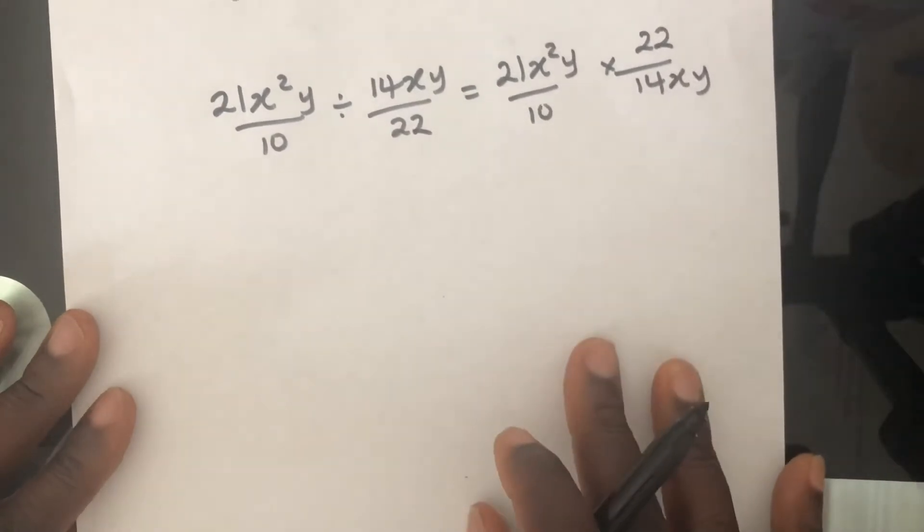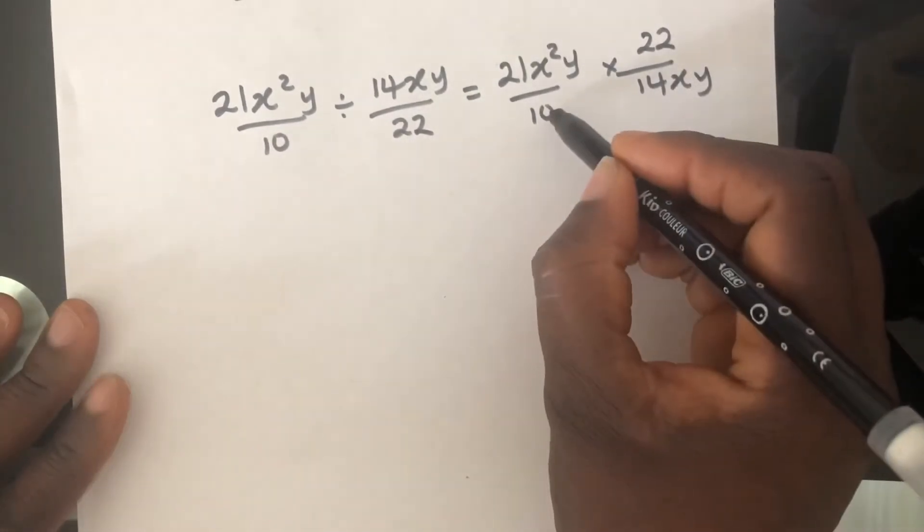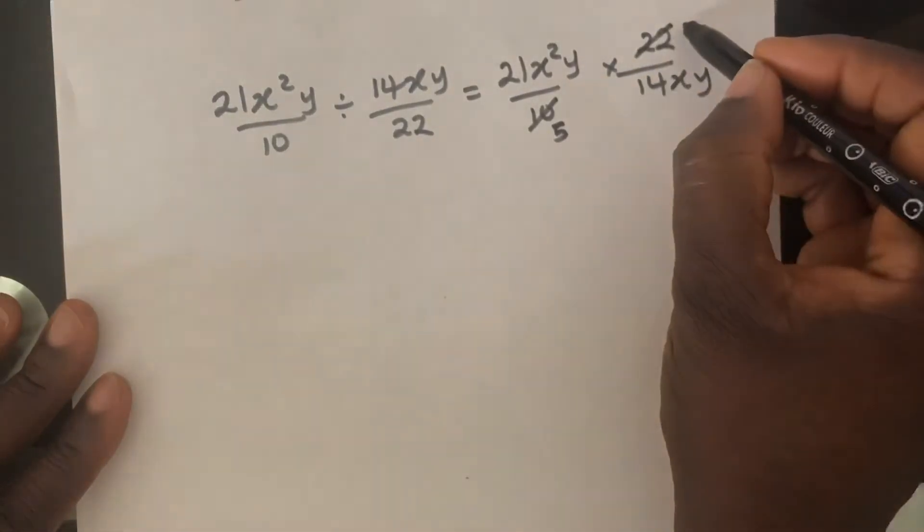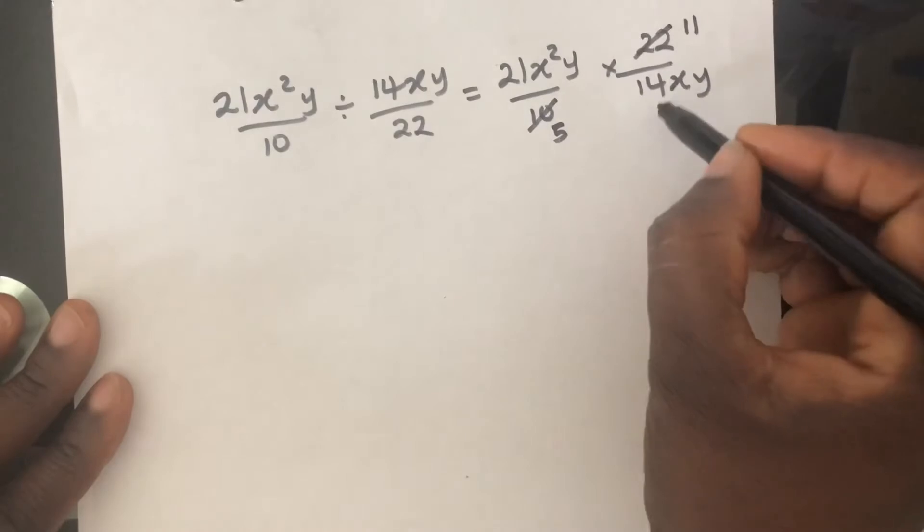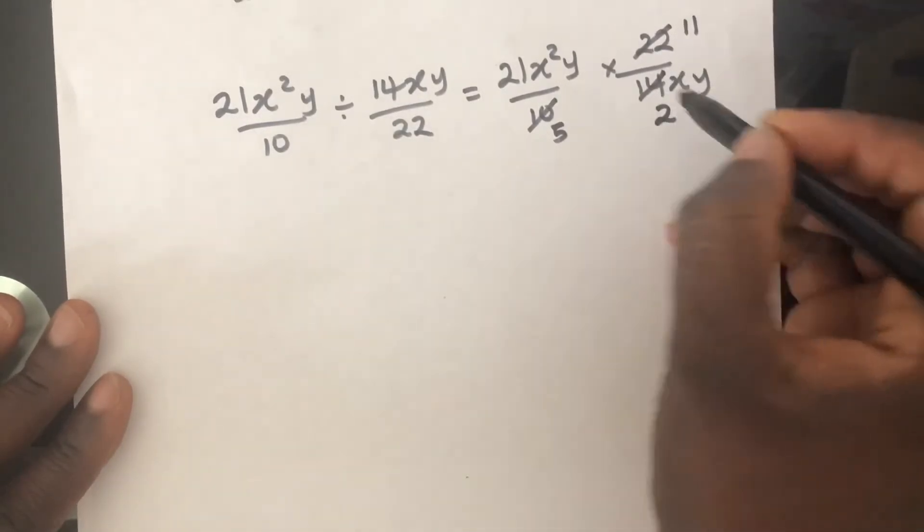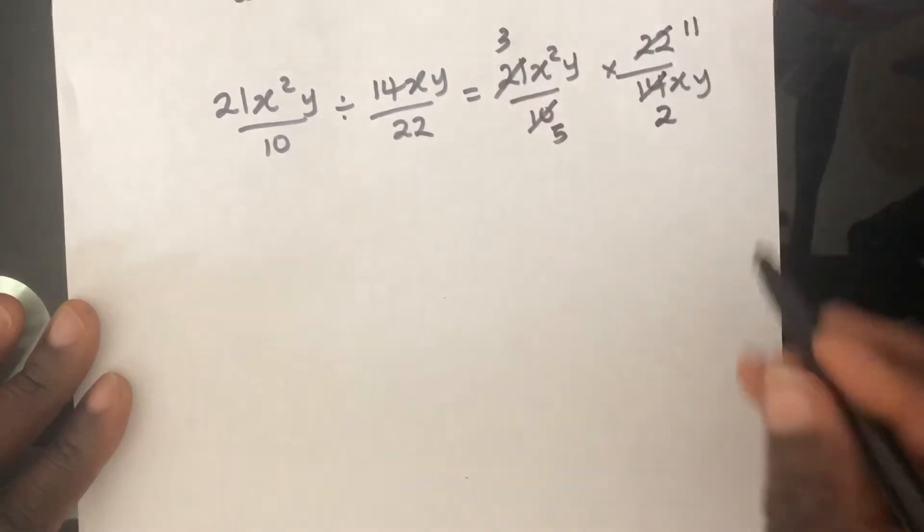Okay. There are definitely things that can be canceled down. 2 can go into 10 five times and 2 can go into 22 eleven times. 7 can go into 14 two times and 7 can go into 21 three times.